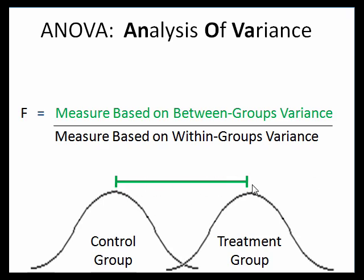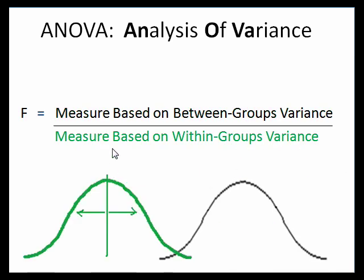If we have a large difference, hopefully that's because of an experimental variance — we had a big impact from drinking the vitamin water. It will also take into account the measure based on within-group variance, looking at how much variability there is within each of our two groups.